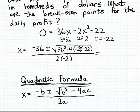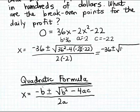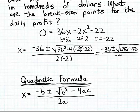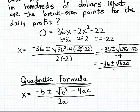Let's simplify this expression. We have minus 36 plus or minus the square root of — 36 squared is 1296, and minus 4 times negative 2 times negative 22 gives minus 176 — so that's the square root of 1120, all divided by 2 times minus 2, which is minus 4. So we get minus 36 plus or minus the square root of 1120, divided by minus 4.